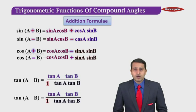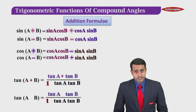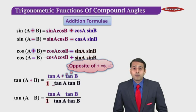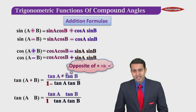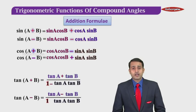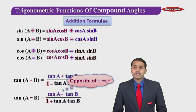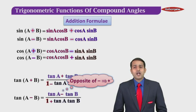If you have a plus on the left-hand side, you will have a plus in the numerator between tan A and tan B on the right-hand side, and the opposite sign — minus — comes in the denominator. So tan of A plus B is tan A plus tan B upon one minus tan A tan B. Likewise, for tan of A minus B, the minus comes in the numerator, and the opposite — plus — goes in the denominator. So the formula is tan of A minus B is equal to tan A minus tan B upon one plus tan A tan B.